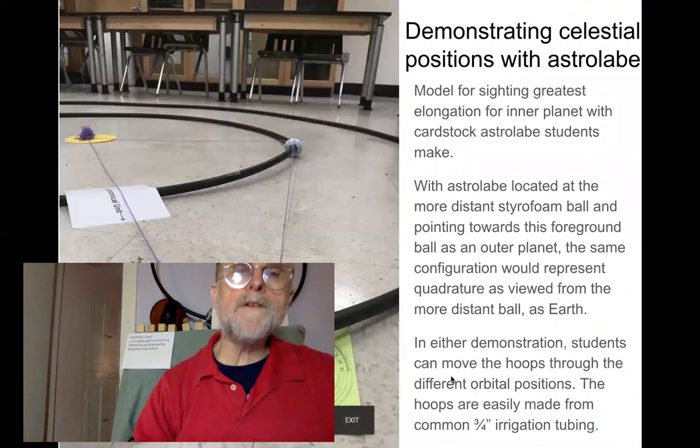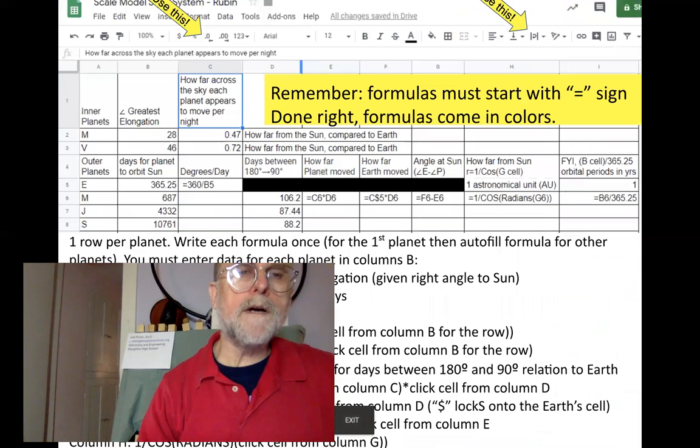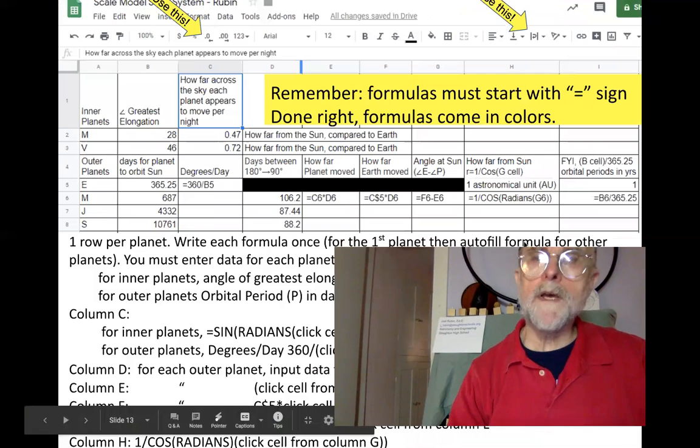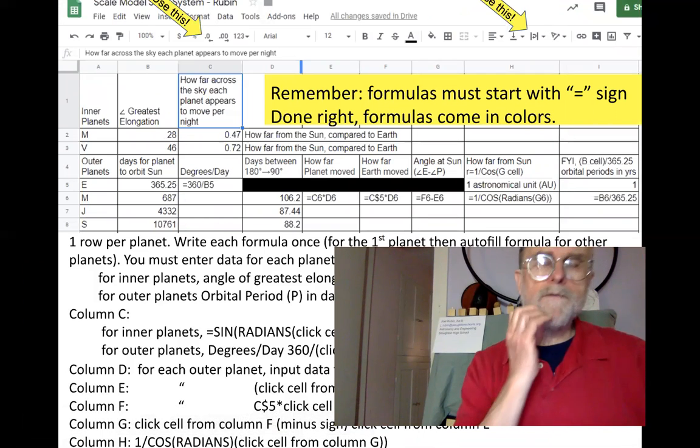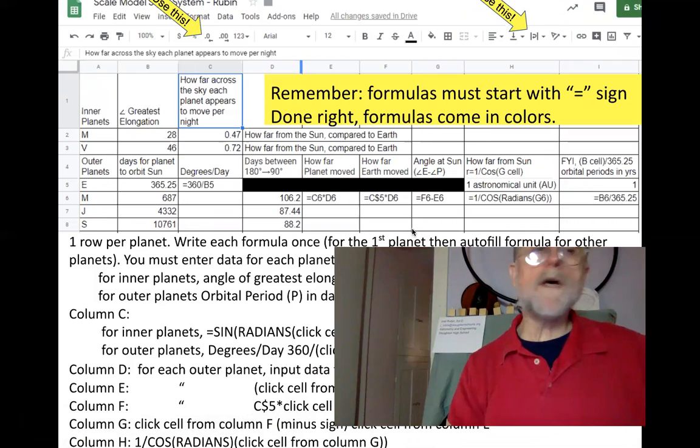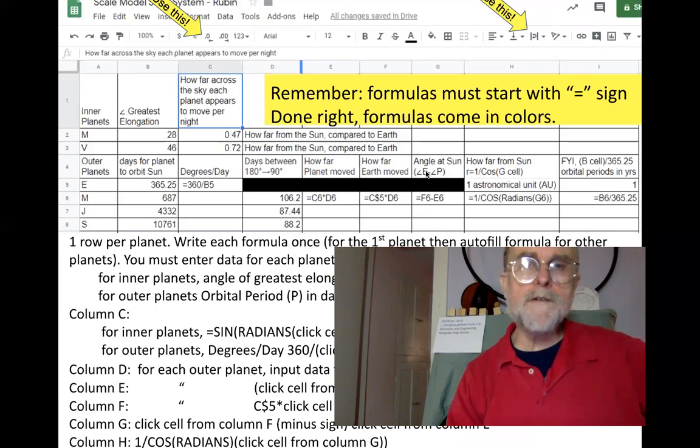Well, the method that was used by Thomas Kuhn and other people at Harvard back in the 1950s and 60s was this one. Count the number of degrees per day between the position where they were in a straight line and the position with the right angle. And compare how far the planet moved to how far Earth moved. And the angle of the sun would be subtracting the shorter distance the planet had gone from the further distance Earth on the inside track had gone. And then you could do one over the cosine of that and you'll get the answer.